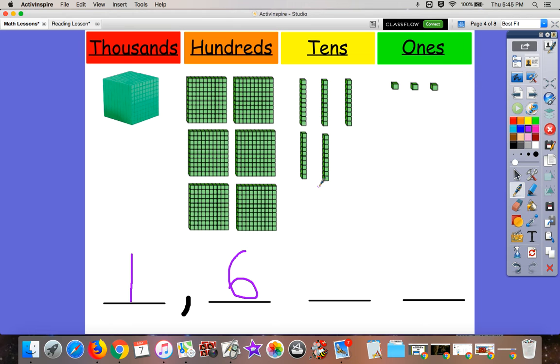How many tens blocks do we have? Five. Good. Remember that means 50. Let's count by tens. 10, 20, 30, 40, 50.